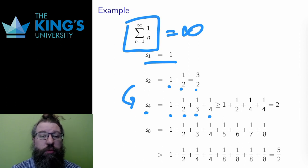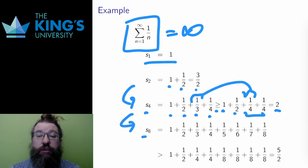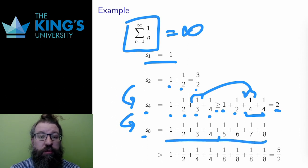Well, this is larger than a similar sum, where I replace 1 third with 1 quarter. Replacing a fraction with a smaller fraction means a smaller sum. Well, then the smaller sum is 1 plus 1 half plus 2 quarters, and 2 quarters is 1 half. So that adds up to 2. Let me skip ahead again a bit. S8, the eighth partial sum, is larger than this sum, where I replace 1 third with a quarter as I did before, and then I replace all of a fifth, a sixth, and a seventh with an eighth. I've replaced with smaller numbers, so I get a smaller sum.